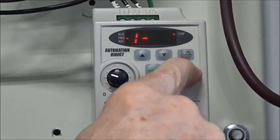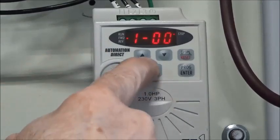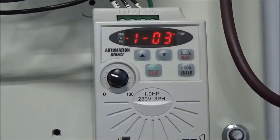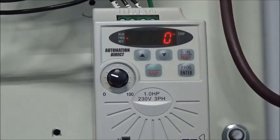And again, hit enter. And say I want to go to parameter group number one, parameter number three in that group. Hit the up arrow till I got three, I hit enter, it gives me the value of zero. So whatever that parameter is, it's set to zero.